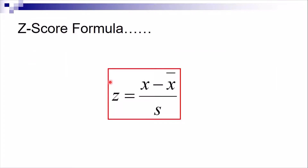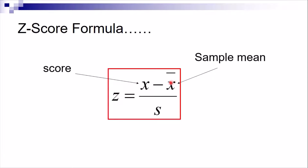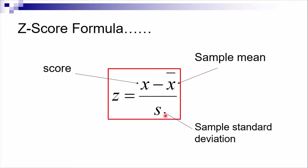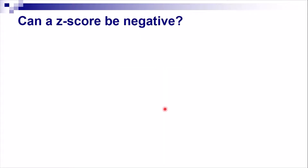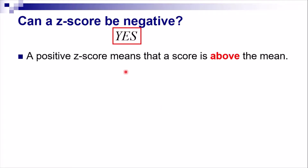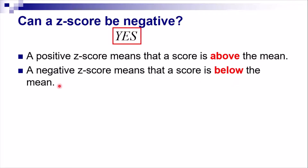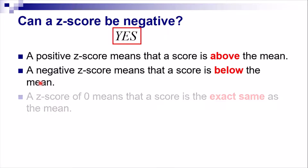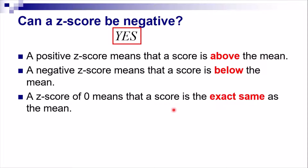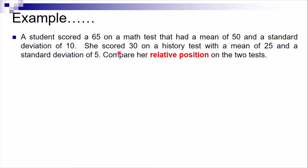Here is the formula for z-score: z equals the score minus the sample mean, divided by the sample standard deviation. Remember this formula. A z-score can be negative — a positive z-score means the score is above the mean, a negative z-score means it is below the mean, and a z-score of zero means the score is exactly equal to the mean.